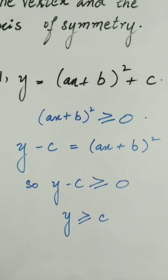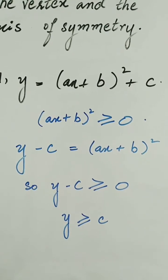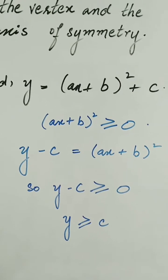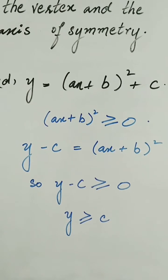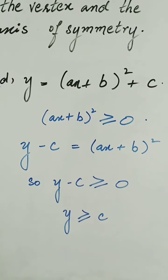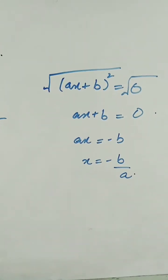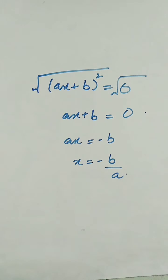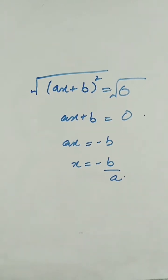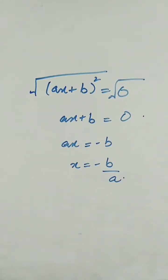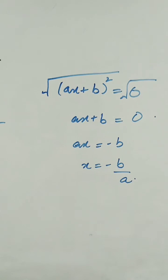Here we have the general variable form y = (ax + b)² + c. We equate (ax + b)² ≥ 0 and write the expression as y - c = (ax + b)², so y - c ≥ 0. For the axis of symmetry, setting (ax + b)² = 0 and taking roots gives ax + b = 0, or ax = -b. The axis of symmetry is x = -b/a, and the vertex is (-b/a, c).